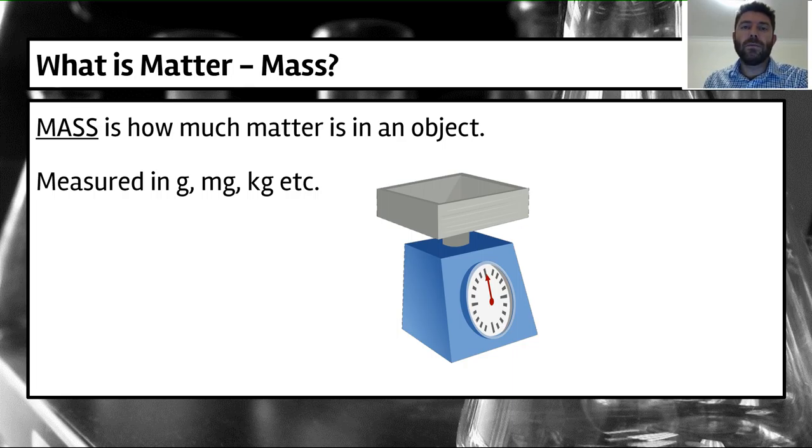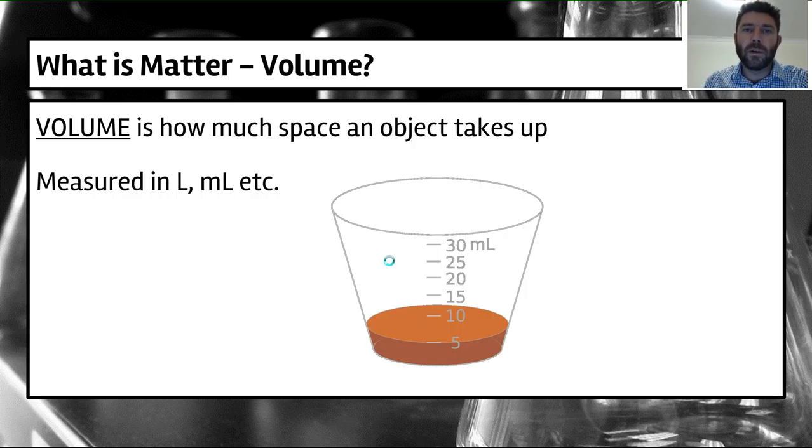So if we clarify those two terms: mass is how much matter is in an object. Basically, we measure this using what you'll see here, a scale, but it's measured in grams, milligrams, kilograms, those units of measure. The other component of what matter is is volume. Volume is basically how much space an object takes up. So how much matter it has and how much space it has combined to make what that object actually is. We usually measure this in milliliters or liters. There's lots of different types of measurements for volume, but basically milliliters and liters would be the scientific unit of measure there.